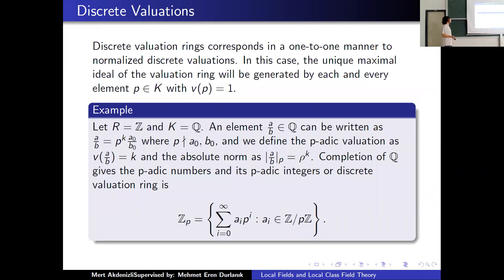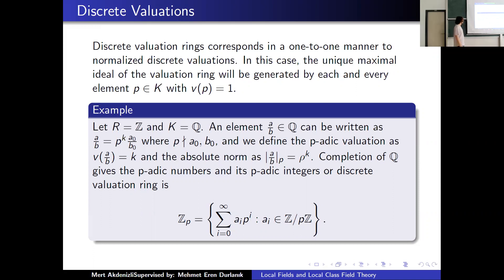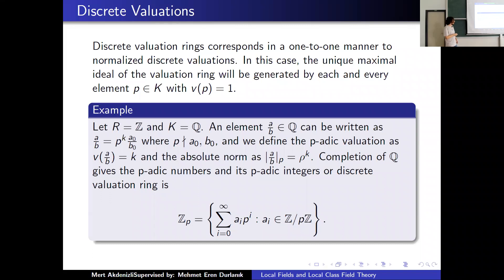These discrete valuations correspond to normalized discrete valuations, and there is an element which has valuation one. For example, looking at Z, the integers, we can write an element in this form and define the p-adic valuation as the power of p. The valuation of p is one. We can also define the p-adic absolute value on Q, and completing Q with this metric, we get the p-adic numbers, whose discrete valuation ring is the p-adic integers.